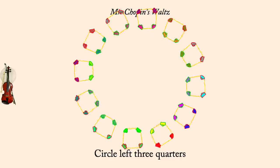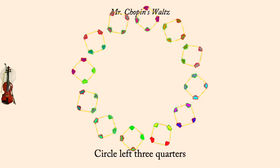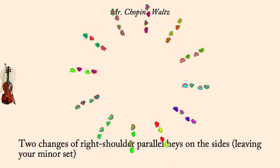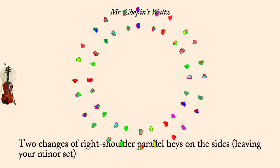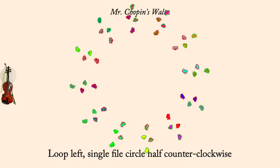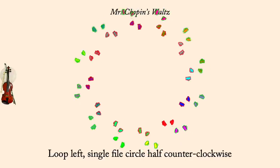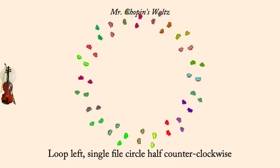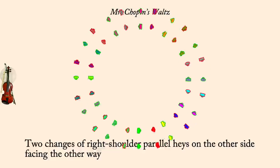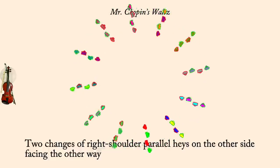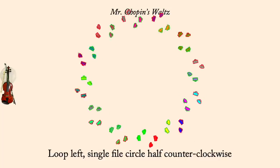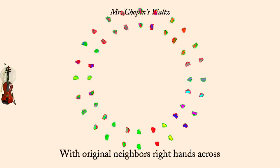Two changes of parallel haze on the sides. Loop left, single file circle half. Two changes of parallel haze on the sides. Loop left, single file circle half. Right hands across.